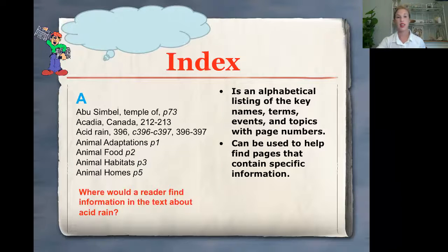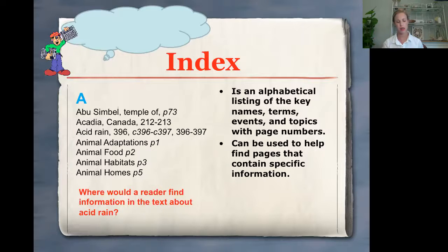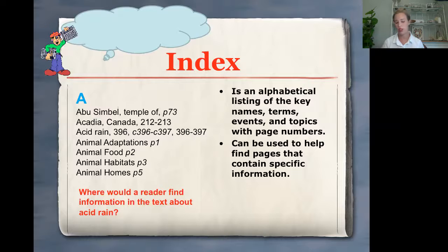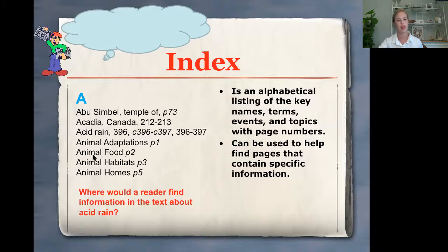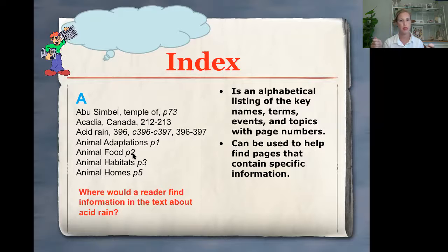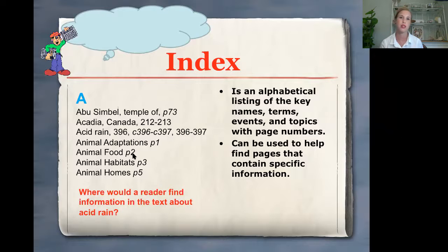The next thing is an index. You're all familiar with this — it's typically in the back of a book. You can flip to the back and look through the index to help you find information. Let's say I'm reading a book and I can't find information about animal food. I look in the index, scroll down, and see that animal food is on page two. So I flip right to page two and there's my information. The index just helps you find things in your nonfiction books and makes it a little easier.